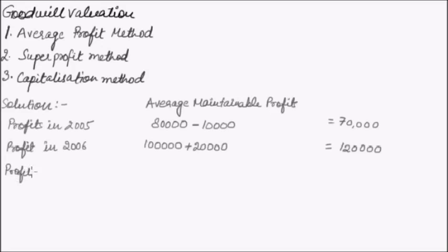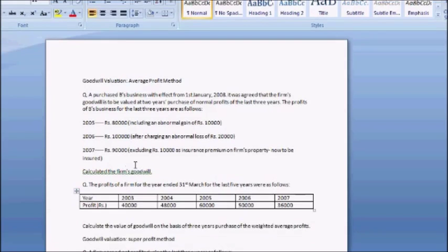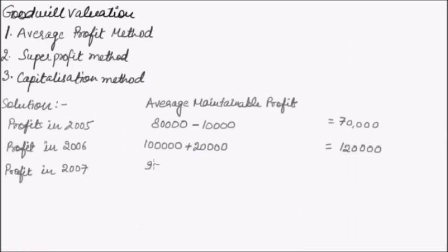The profit in 2007 is Rs. 90,000, excluding Rs. 10,000 as insurance premium on the firm's property, which is now to be insured. This Rs. 10,000 is an expense not yet incorporated, so we deduct it. Our Average Maintainable Profit for 2007 comes to Rs. 80,000.